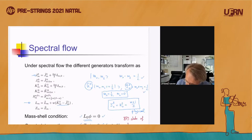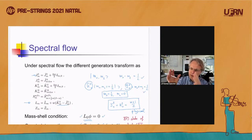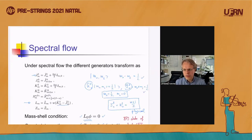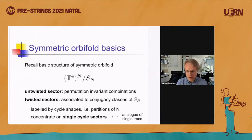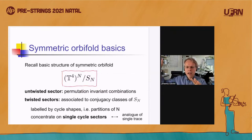This state will turn out to correspond to the BPS state of the dual CFT. And it will come from the W-cycle twisted sector. In order to explain that, now is the moment I have to switch sides and move from the worldsheet to the dual CFT and give you a two-slide reminder of what the symmetric orbifold theory looks like, so you know what we should be comparing with. What I want to compare it with is the symmetric orbifold theory of T4.